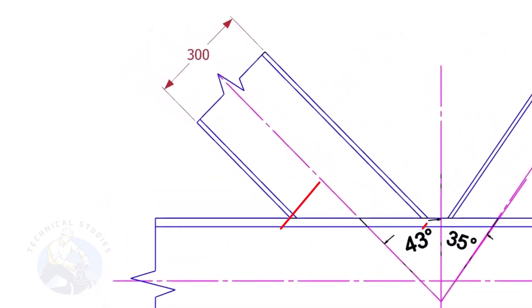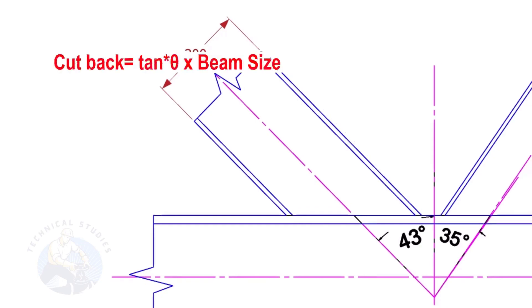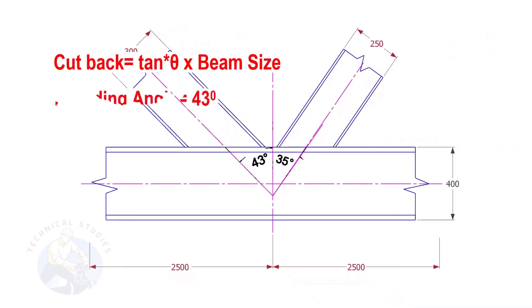Let us calculate the cutback of this beam. The formula to calculate the cutback is tan degree multiplied by the size of the beam. If the including angle is 43 degrees and the size of the beam is 300, the cutback is tan 43 into 300.